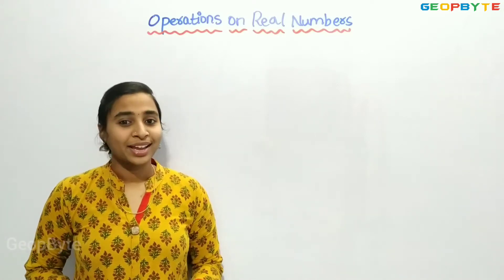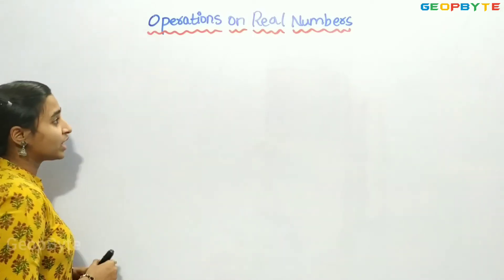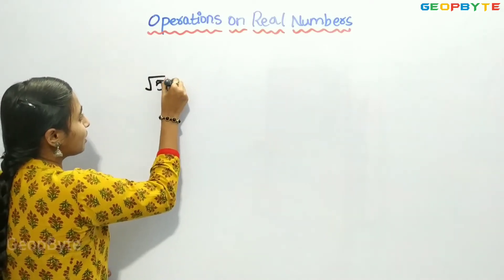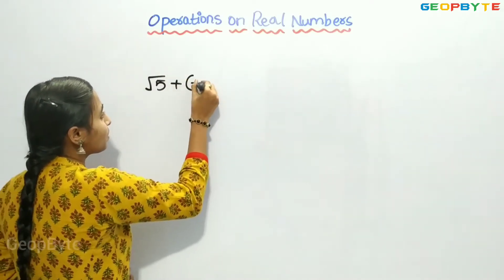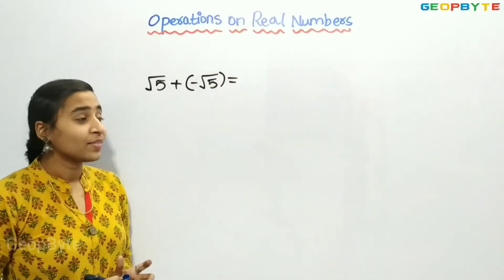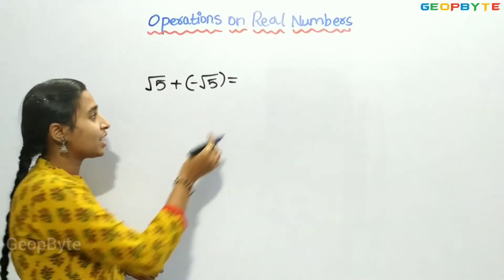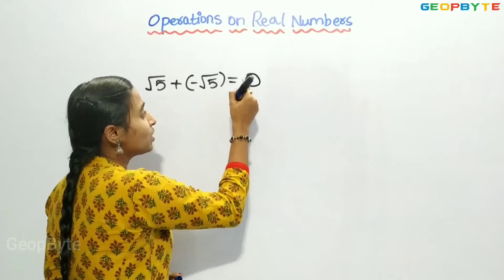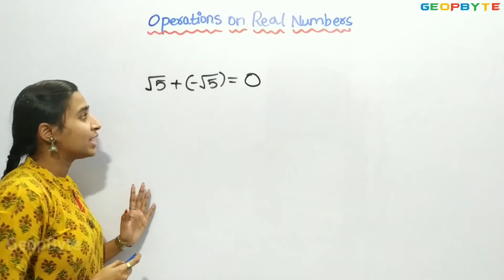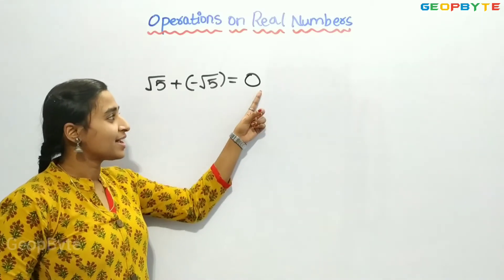In the case of addition, let me take root 5 plus minus root 5. There are two irrational numbers being added. The answer is 0, and 0 is a rational number. So when we add two irrational numbers, we can get a rational number as the answer.